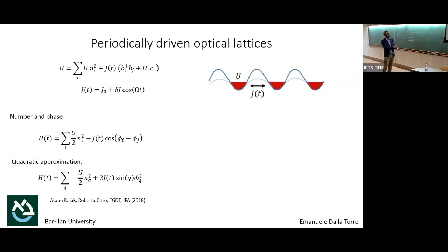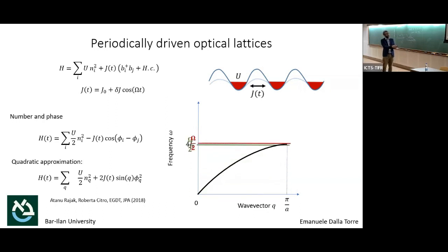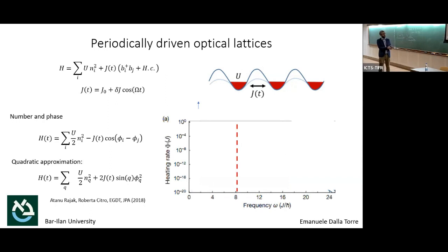From the linear analysis you get phonons with some spectrum — wave vector vs eigenfrequency. You can ask: is there a parametric resonance? It depends on the driving frequency. If the driving frequency is low, there is a parametric resonance; if it is large, there is no resonance. According to this simple picture, at low driving frequency there is energy absorption because of the resonance, and at high driving frequency there is no energy absorption.